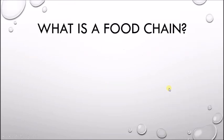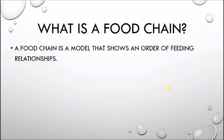First, what is a food chain? When we look at any ecosystem, we can represent how energy moves from one organism to another with a food chain. So a food chain is a model that shows us how energy flows in an ecosystem. Here it's called a feeding relationship — that is who's eating who. We get our energy, and organisms get their energy, from eating other things. So in a food chain and in a food web, the model shows us who's eating who.